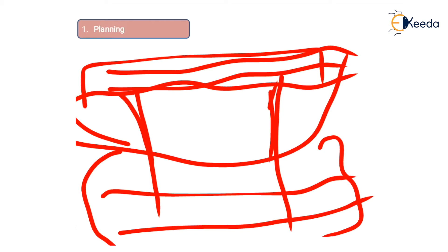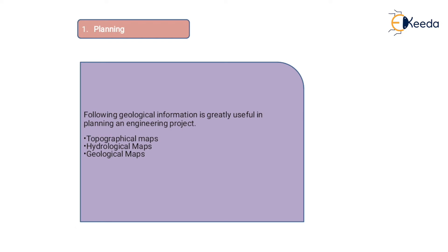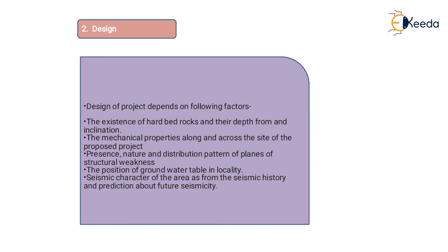Geological information is greatly useful in the planning and engineering process. For planning, we need to know which type of rock is present and the exact situation below the surface. For this, we use topographical maps that give information about the total land area, hydrological maps that show where water accumulates, and geological maps that represent which type of rock is present at a particular area.